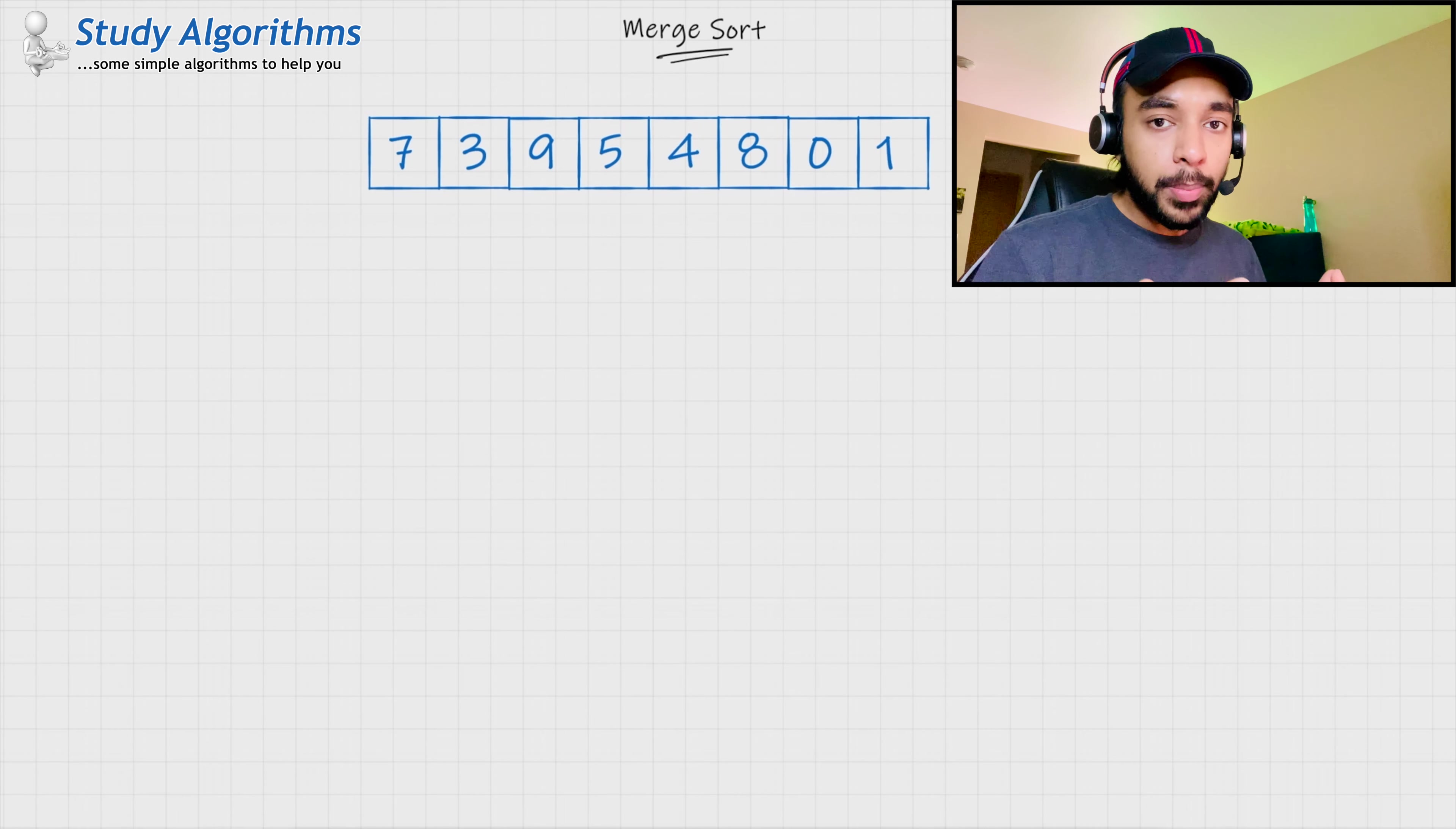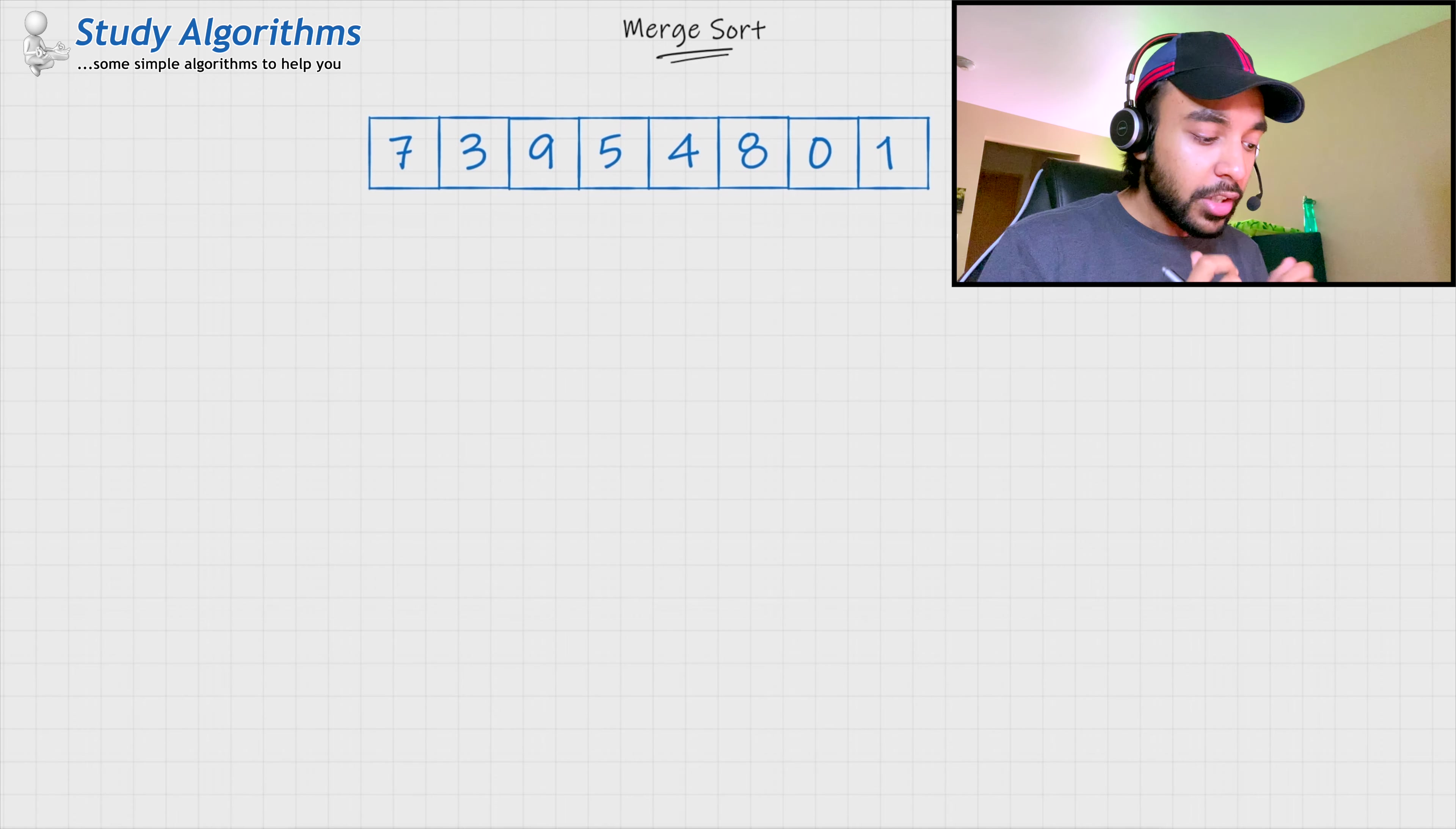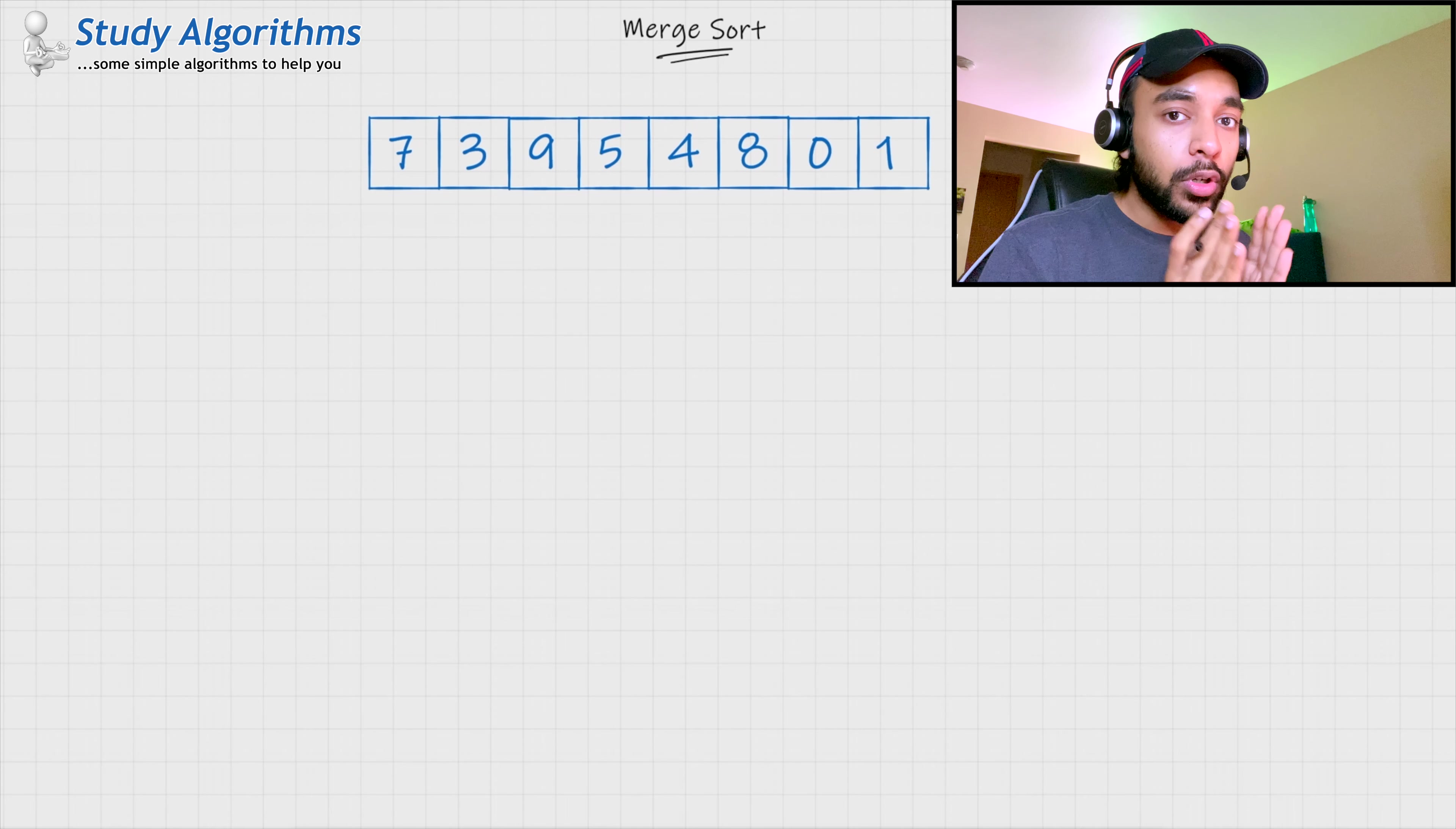So, before we begin, merge sort works on the concept of a divide and conquer algorithmic paradigm. Check out my video on divide and conquer algorithmic paradigms if you are new to this concept. The basic summary of divide and conquer is that you divide a problem into smaller parts and you solve these smaller problems. And once you are done with solving these smaller problems, you would combine all of those results and eventually, you would solve your original problem. So, how can we apply that concept in merge sort? I have this array, right? So, what I need to do first of all is, I need to do my divide phase.